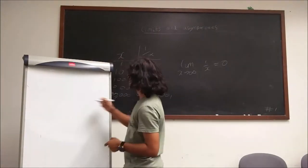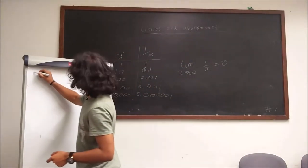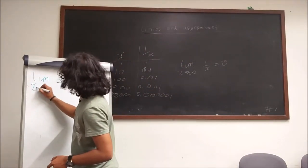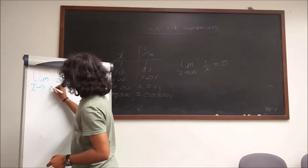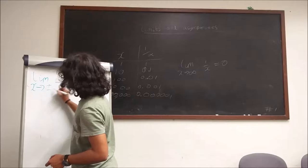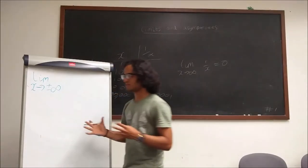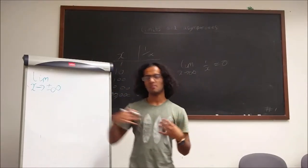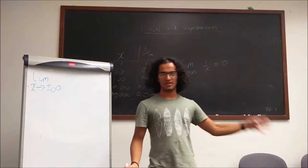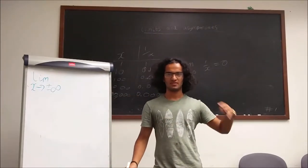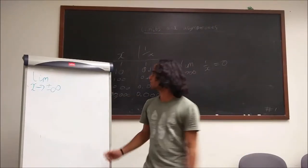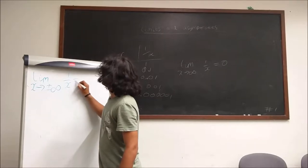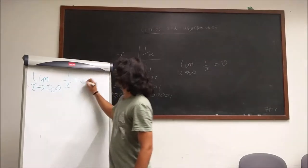A mathematical way of representing this is saying that the limit as x tends to infinity of 1 over x equals 0. We're saying that as x tends to positive or negative infinity of 1 over x is equal to 0, because it doesn't matter whether we're going up or very far into the negatives.